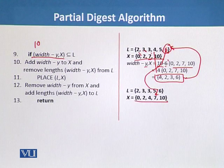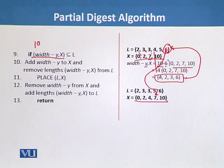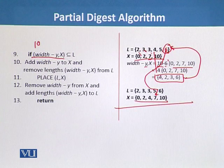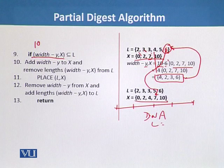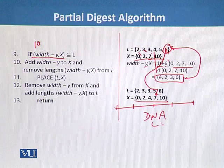This is how we solve the real-time problem using the brute force algorithm for the partial digest problem. We can apply this information to the actual partial digest problem of DNA. If we have a multiset L of different fragment lengths from DNA restriction digestion, we can calculate the distances between the restriction sites.